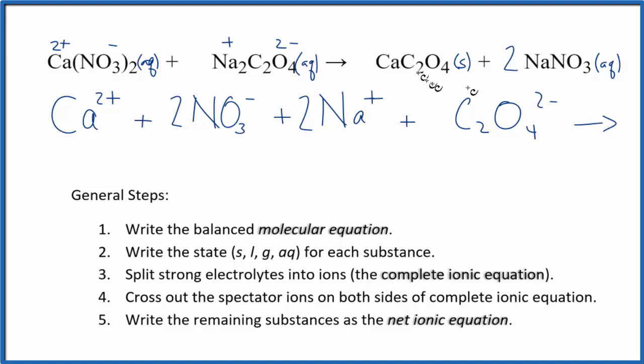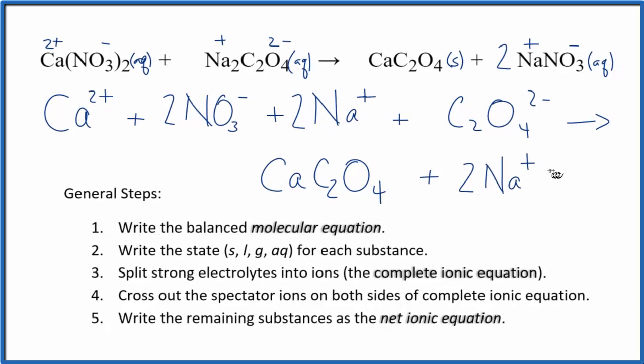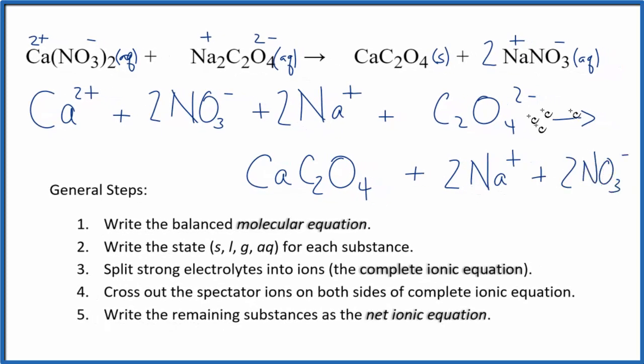For the products, we don't split solids up when we do net ionic equations. That's because they're at the bottom of the test tube. They're already together. They're not split apart there. So we don't do that. We'll just write CaC2O4, and that'll be our solid. Then we have, we said sodium is positive, nitrate ion is negative, two sodium ions, and two nitrate ions. So this is the total or complete ionic equation.